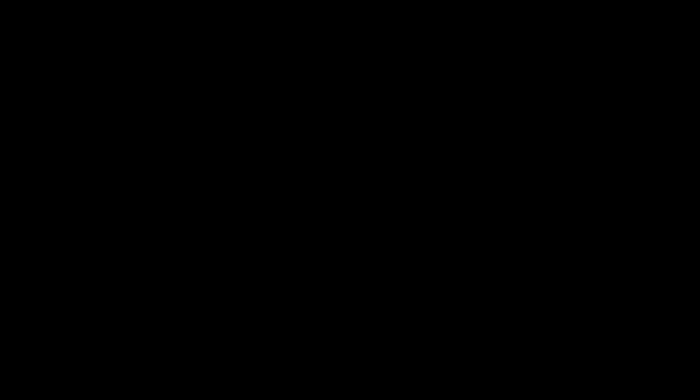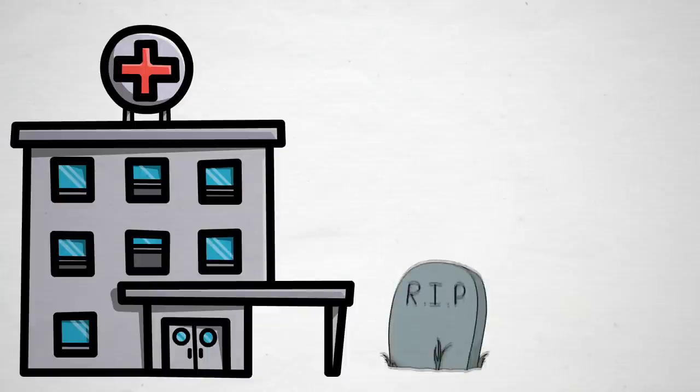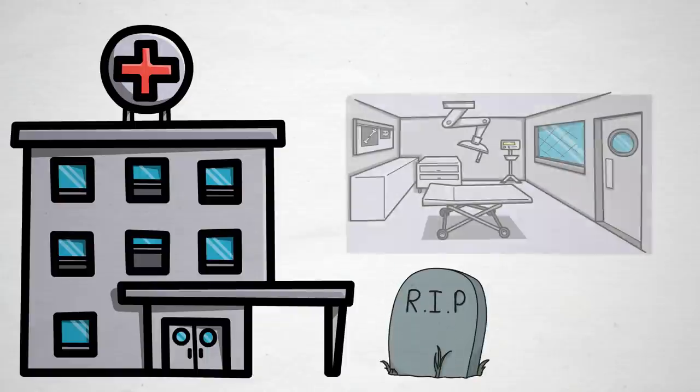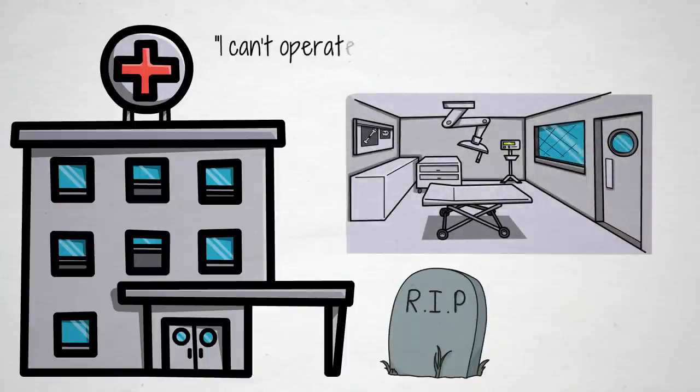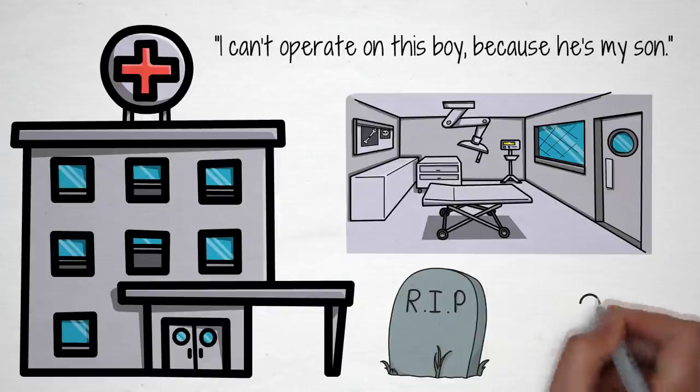A father and son are in a car crash and are rushed to the hospital. The father dies. The boy is taken to the operating room and the surgeon says, I can't operate on this boy, because he's my son. How is this possible?